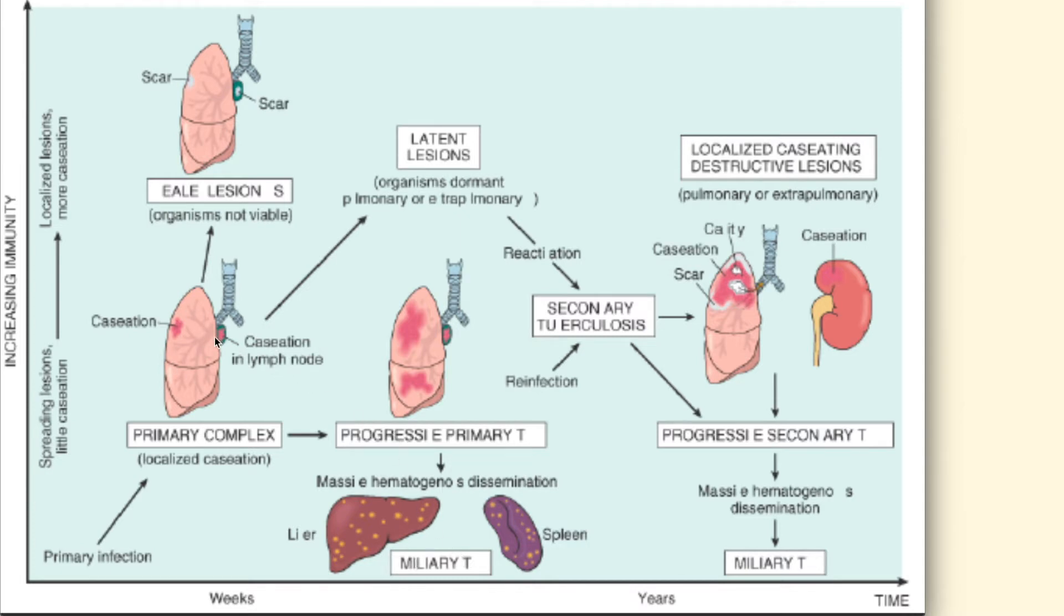Now, with increasing immunity, this primary complex could also develop into a latent lesion with the organisms. They became dormant and they lie in the lung tissue and also in some extrapulmonary tissues. And with decreasing immunity and through time as it progressed, it may reactivate and form secondary tuberculosis.